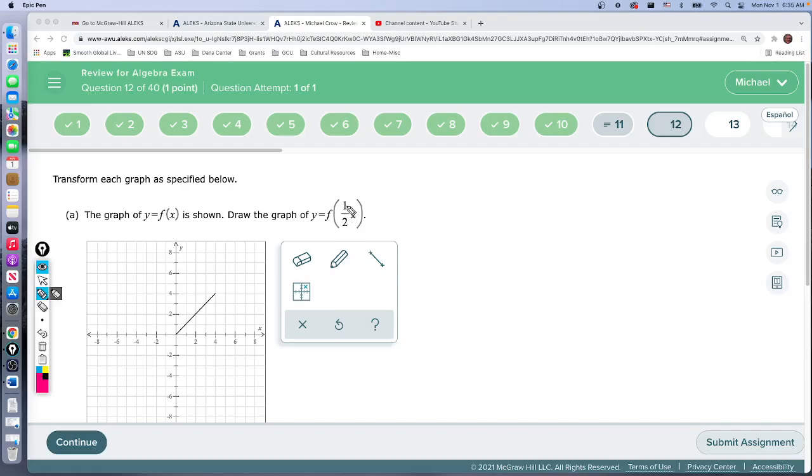So while this looks like we're taking 1 half, sort of think of it as taking x divided by 2, right, that's what 1 half really does, dividing by 2. What we're going to do is we're going to take the x values and multiply them by 2.